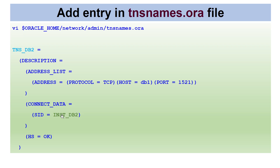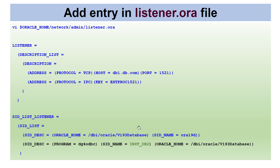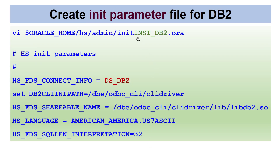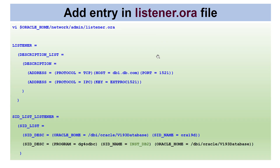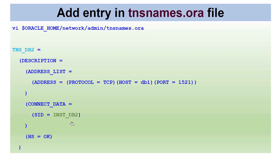Next, create a TNS entry in tnsnames.ora. You must use the same SID that was used in listener.ora and in the init parameter file. The TNS alias name itself can be anything — for example, tns_db2 — and this TNS entry points to the DB2 database.